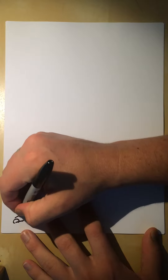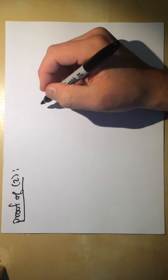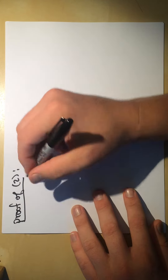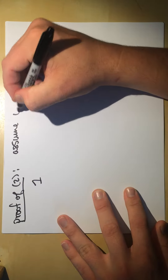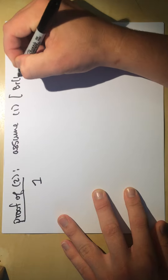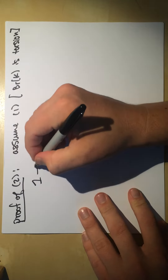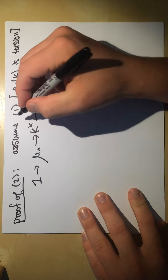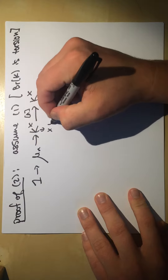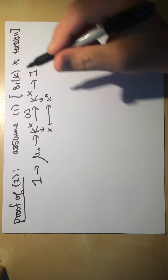Let me give the proof of claim two: the baby Brauer equals the n-torsion of the Brauer for fields. Assuming claim one — that Br(k) is torsion — we start with the Kummer sequence: 1 → μₙ → k* → k* where the map is raising to the nth power.